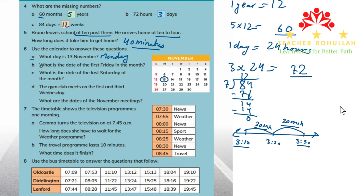In part B, it says: what is the date of the first Friday in the month? Starting from the 1st, which is Wednesday, the first Friday is the 3rd. The answer is 3rd November.